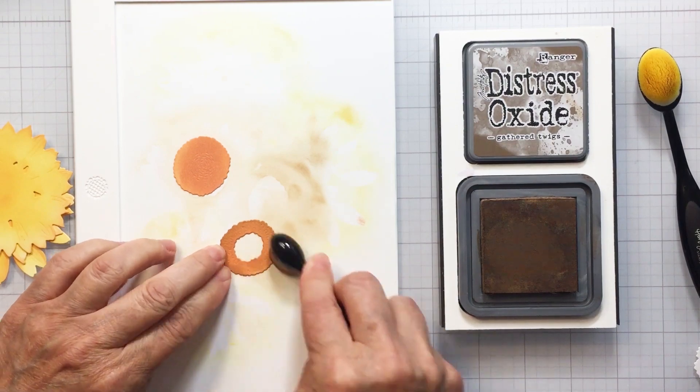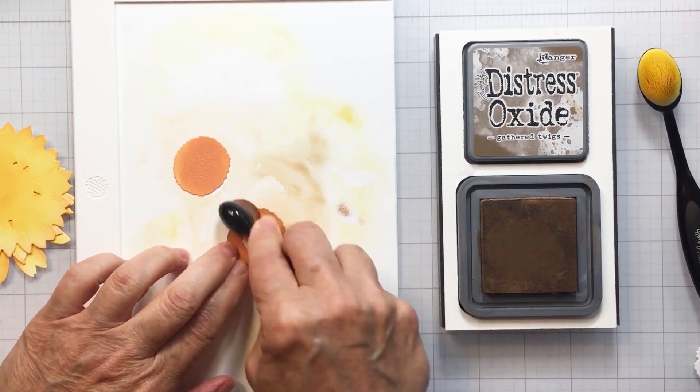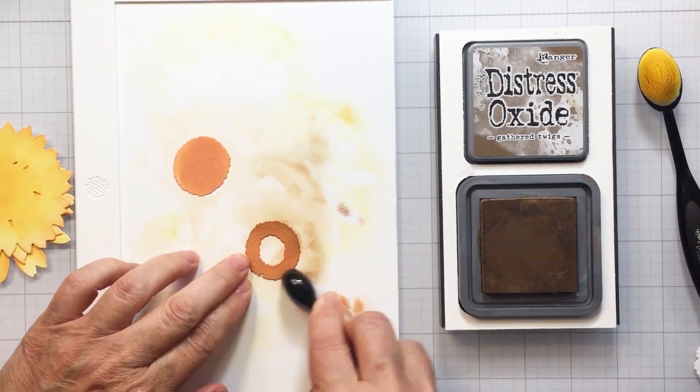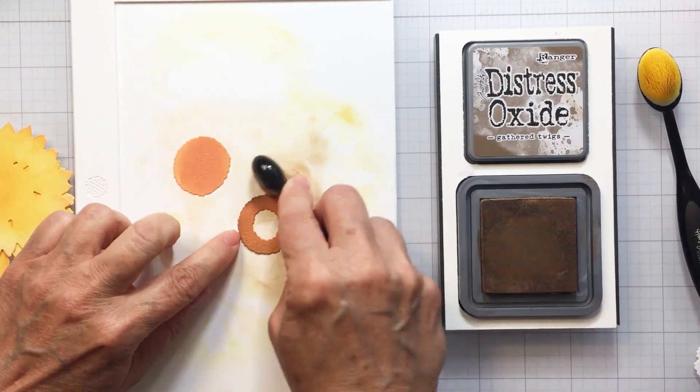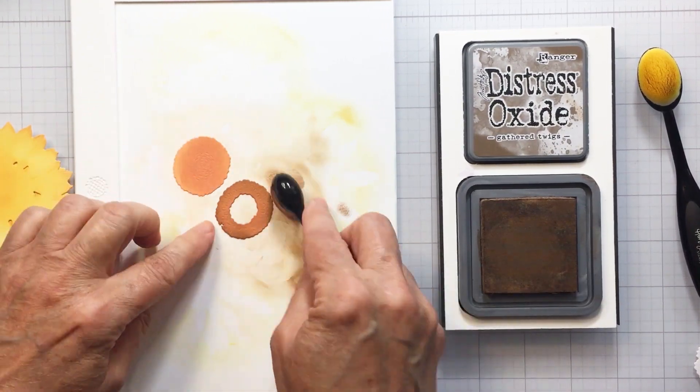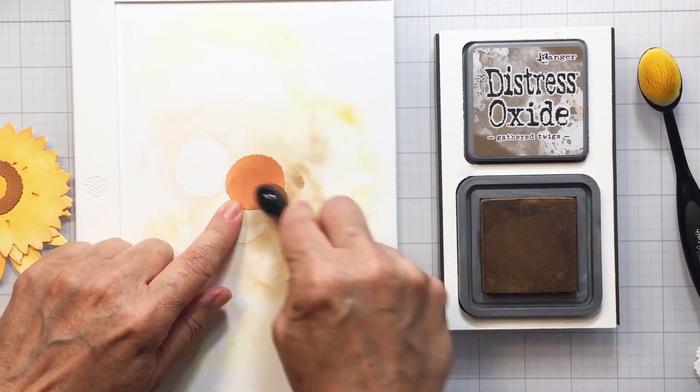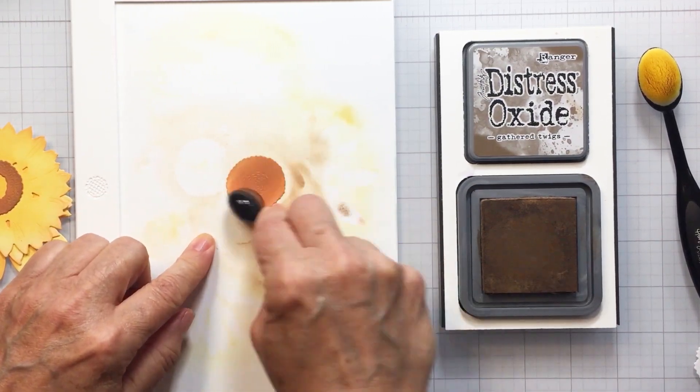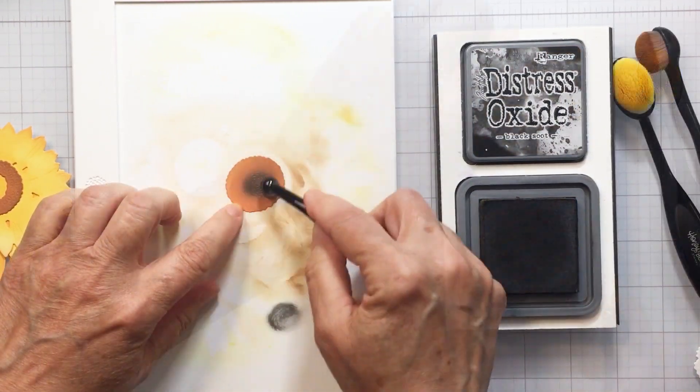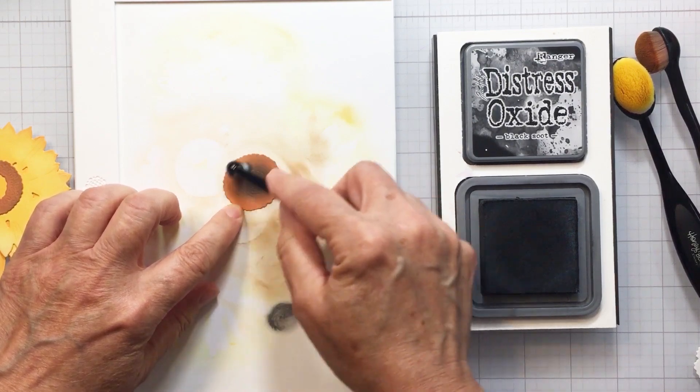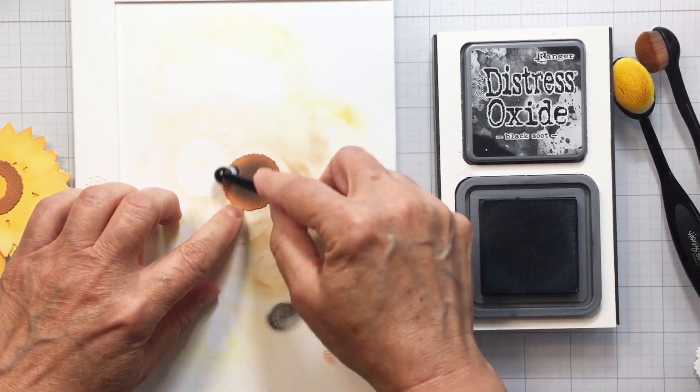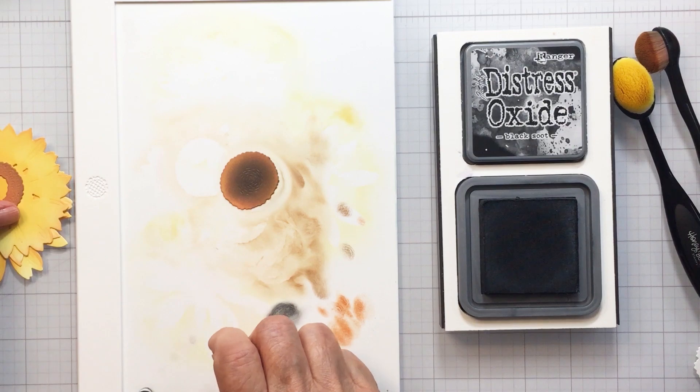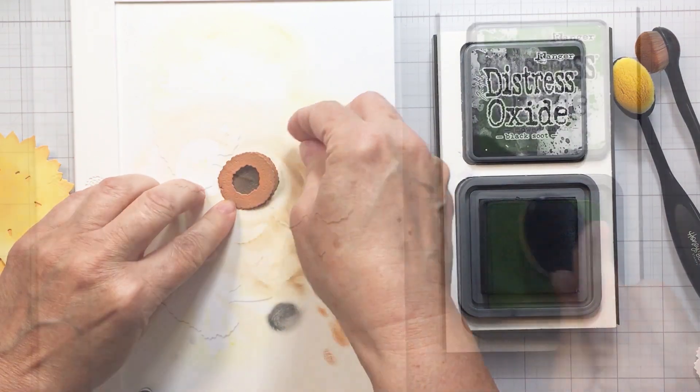So I'm using that Rusty Hinge again and then I'm just going to add a little bit of black with black soot and just finish up the center portion of my sunflower here with those two colors. I love how this turned out so much. I just wanted to get a little bit of that black soot in the center nice and deep and I'm just going to use one of the smallest detail brushes from Honey Bee to create that really impactful color in that center that's nice and dark.